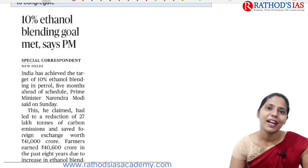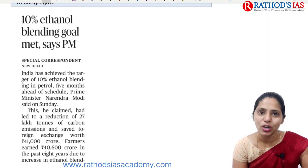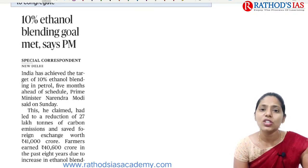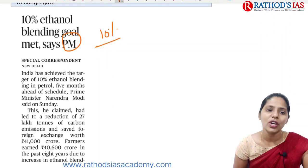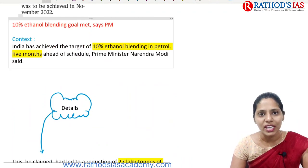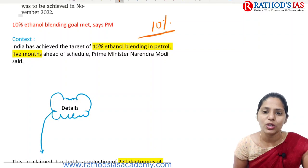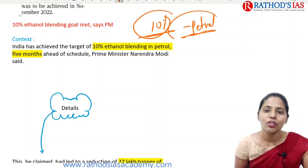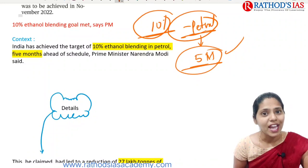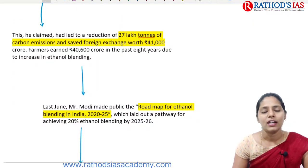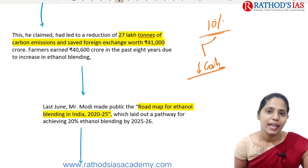Next topic: ethanol blending. India has achieved the target of 10% ethanol blending in petrol — five months ahead of schedule, as announced by our Prime Minister. According to him, this 10% ethanol blending has helped reduce carbon emissions because ethanol leads to more complete burning of fuel. It also saved foreign exchange worth approximately ₹41,000 crore and increased farmers' income by about ₹40,600 crore over the past eight years.